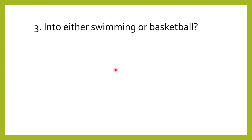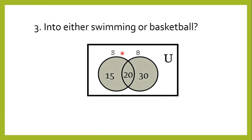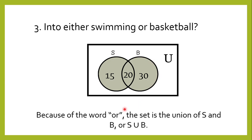Third, into either swimming or basketball. We shade all elements in sets S and B. The word 'or' pertains to the union of S and B — all elements included in both swimming and basketball. Therefore, we add these elements: 15 plus 20 plus 30, and the answer is 65 students.